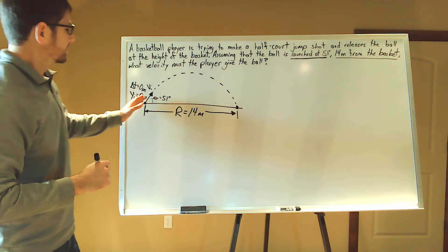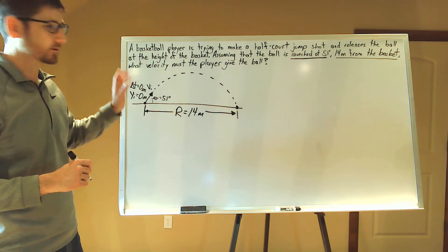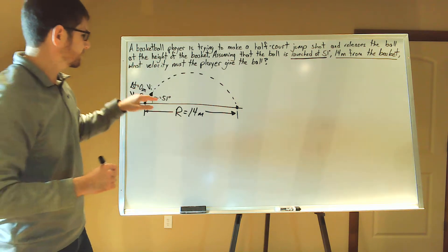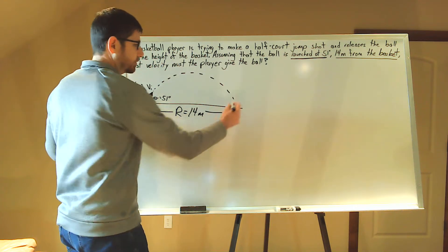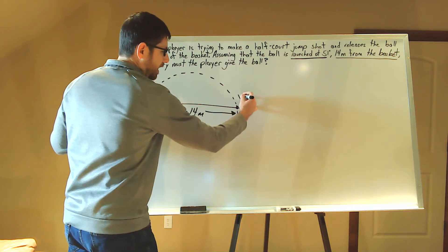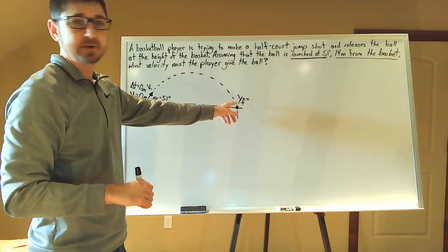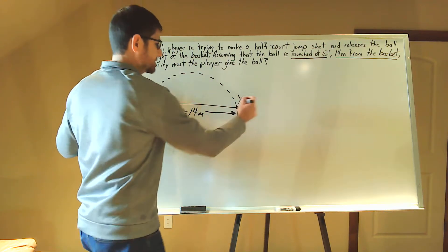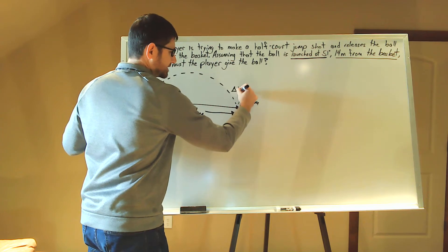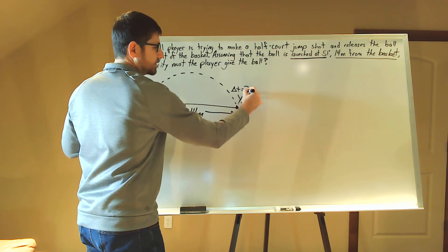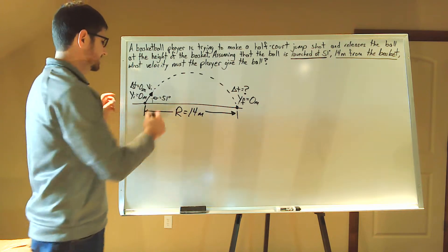The player shoots the ball, and at the same height that the player released the ball — that's the height of the basket. So y sub f, the final position in the y direction, is equal to 0 meters. And delta t over here is unknown; we do not know what delta t is.